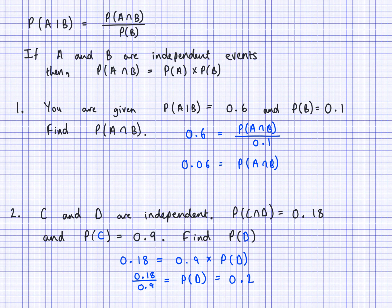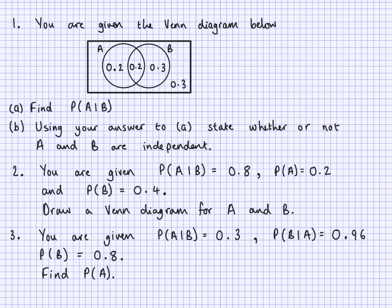Next I'm going to give you a variety of questions to do. You have to do all of them and show all your working. Question one: you're given a Venn diagram and need to find probability of A given B, then state whether A and B are independent. Question two: given some probabilities, draw a Venn diagram for A and B. Question three: given some probabilities, find the probability of A.